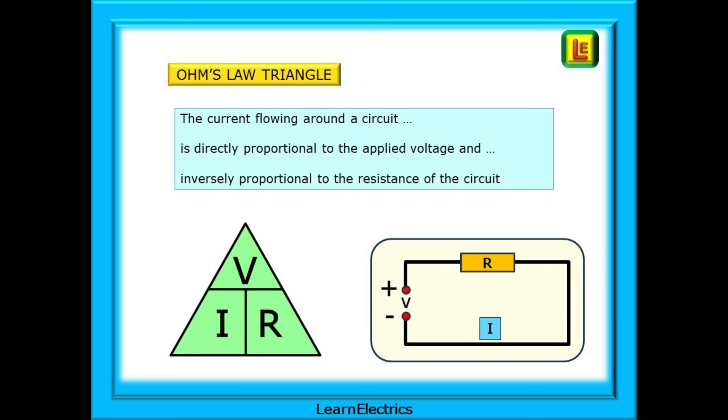This is the Ohm's law triangle. With practice, it will become permanently locked into your mental toolbox. You will never forget it. Directly proportional means that as the voltage increases, the current increases. And inversely proportional tells us that if the resistance increases, then the current will go the opposite way and decrease.